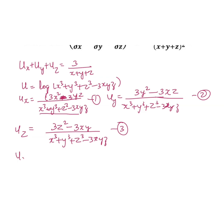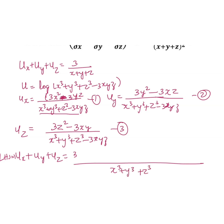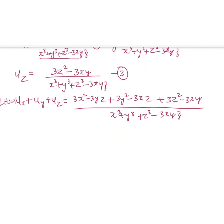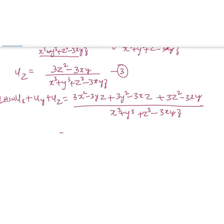Now adding u_x + u_y + u_z. Since the denominators are all the same — that is (x³ + y³ + z³ − 3xyz) — we can write the combined numerator as: 3x² − 3yz + 3y² − 3xz + 3z² − 3xy.